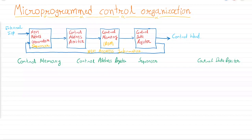As you can see in the figure, there are four elements: the first element is the next address generator, next is the control address register, then the control memory, and then the control data register. There is a feedback loop from the control data register to the next address generator, an output control word, and an external input.